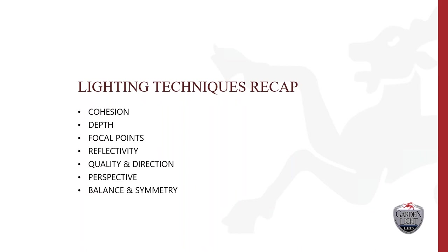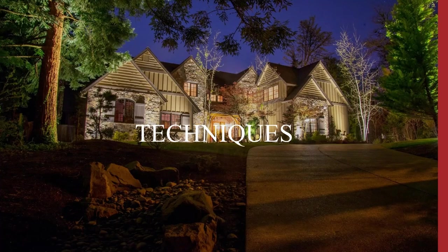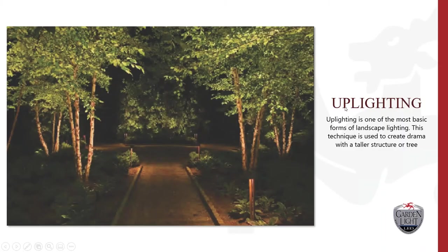Now, lighting techniques — these are the techniques you use to accomplish your objectives and principles. The first is uplighting, a very popular technique. Directional lights and well lights will be a majority of the fixtures you use. With a white birch tree, for example, the lighter bark gives a lot of reflection so you're actually illuminating the pathway through the tree's reflection. A general rule of thumb for uplighting a tree: place the bullet or well light halfway between the trunk and the canopy and use a 40 or 60 degree optic to catch the full canopy.